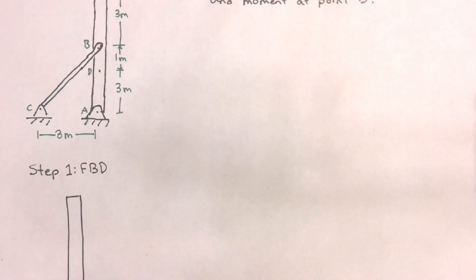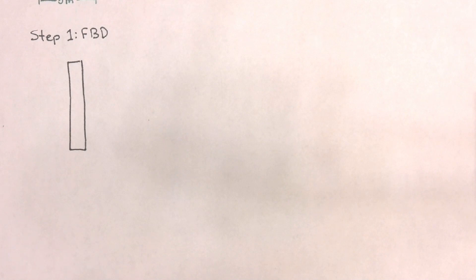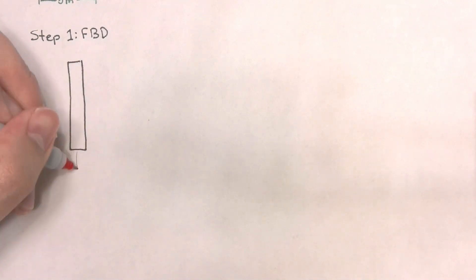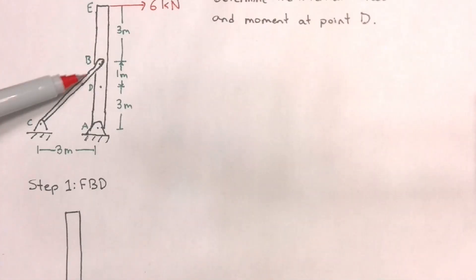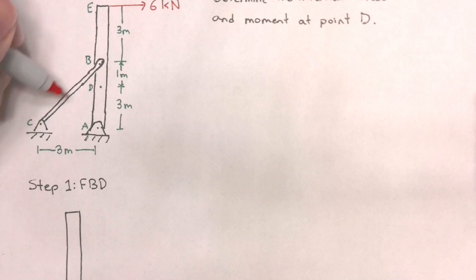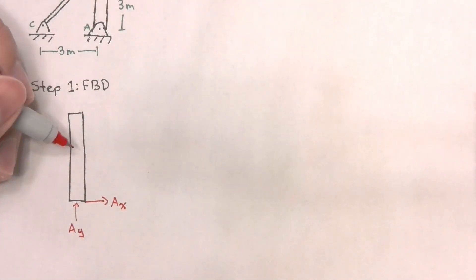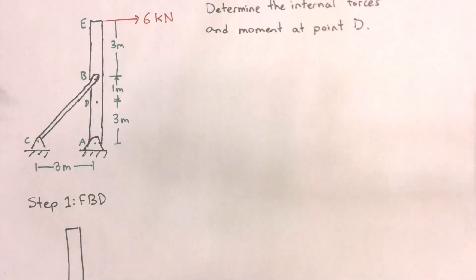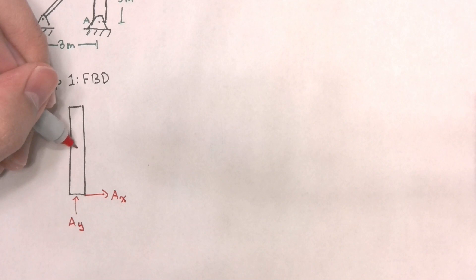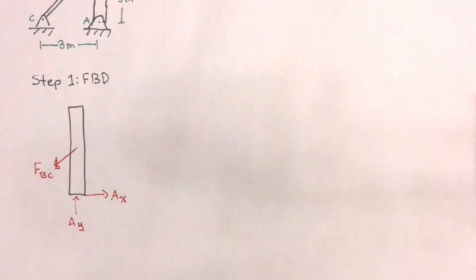I have a hinge acting on A, so I will have an x- and y-reaction. I have a hinge connection from member BC to member AE. However, because BC is a two-force member bar, the force will only be in tension or in compression. So I can simplify the force at point B by taking it to be equal to a tensile force that goes along this bar. I'm assuming it's tensile, but if I'm wrong, all I have to do is change the direction of the arrows once I get a negative sign. I also have an external force of 6 kN acting at point E on the top of the beam.